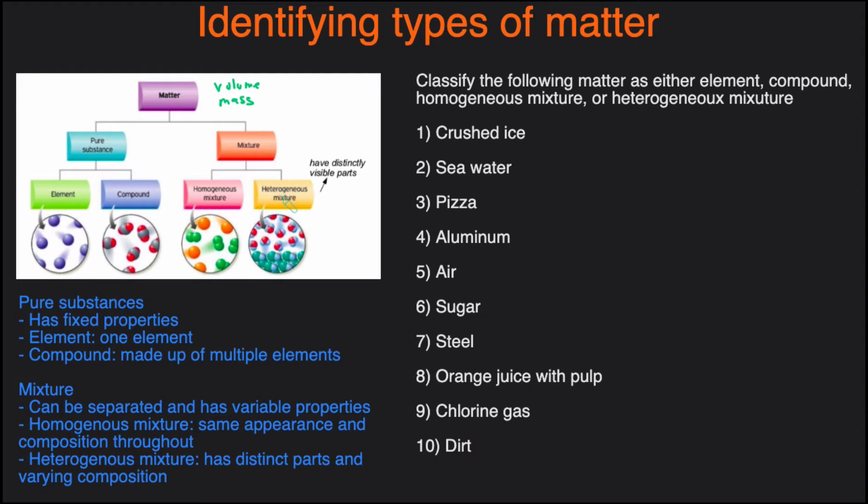Heterogeneous mixture, on the other hand, they have pretty distinct parts. For example, if you had oil and water, you'll have oil on the top and then water on the bottom, and that would be a heterogeneous mixture. It's a mixture because you have two substances, but it's heterogeneous because there's a very clear distinction where the oil is and where the water is.